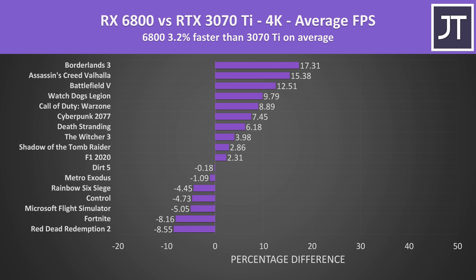The 3070 Ti starts making a comeback at 4K, with 7 of the 17 games now reaching higher average FPS with the Nvidia card. The 6800 still has the lead in most games — on average it's 3% ahead — so a small difference overall, but some of the games that favor AMD are still able to get nice gains on the 6800.